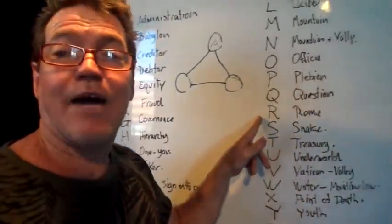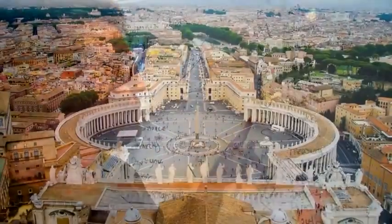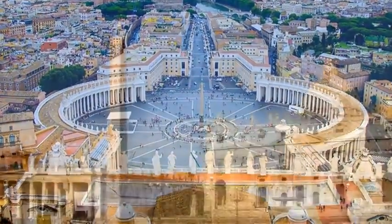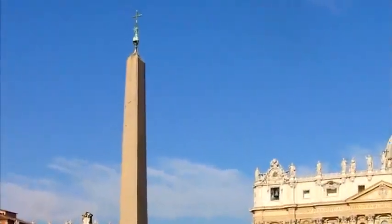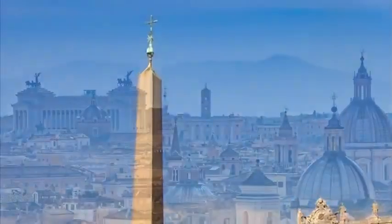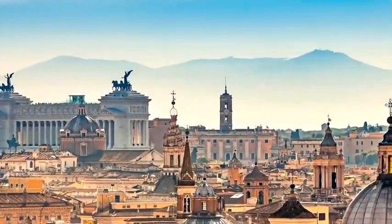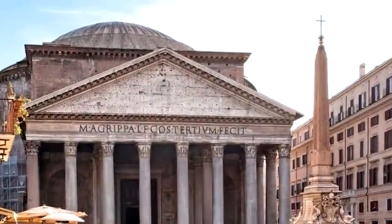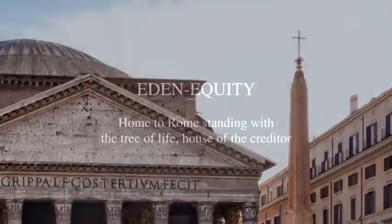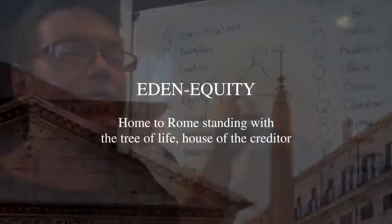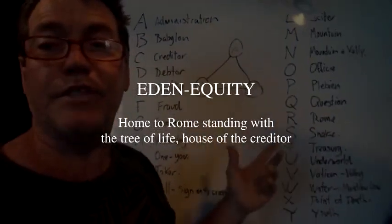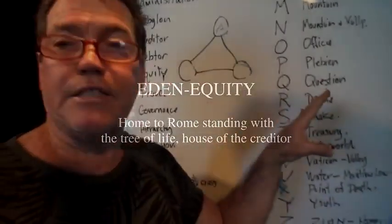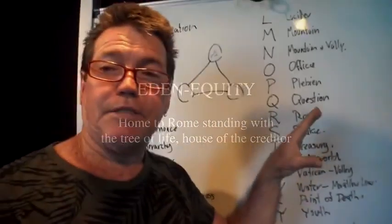R is Rome. Rome owns this — the Vatican owns it. Home to Rome. Home is really to become the creditor of the system. The Vatican operates it. This is the system of the dead that Christ warned us about when he was around a couple thousand years ago.